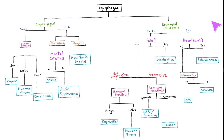Hello, this is ASAP USMLE and today we're going to tell apart the differential diagnoses for dysphagia by organizing them into a simple flowchart. First, we need to listen to the patient's complaint. If they mention trouble initiating the swallowing due to coughing or choking, think of oropharyngeal dysphagia.